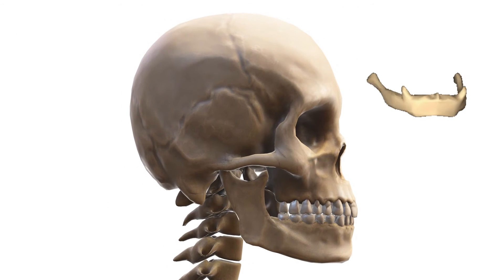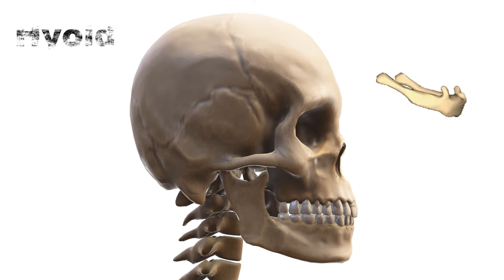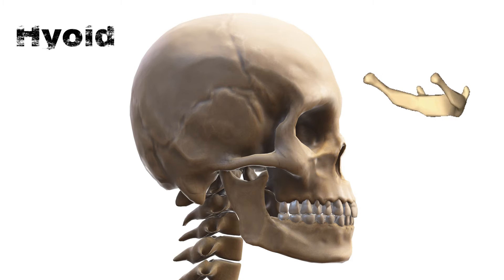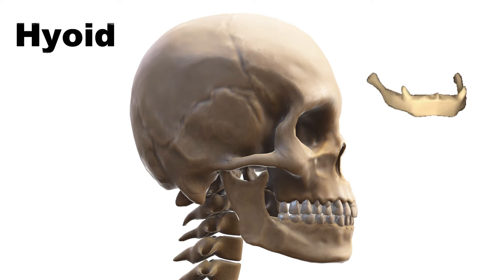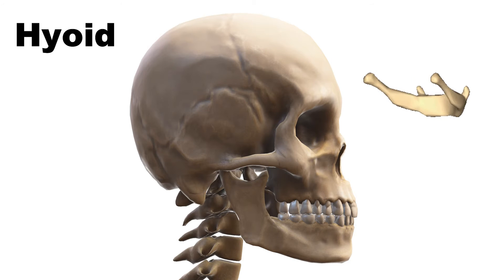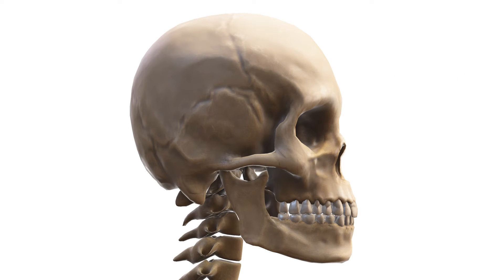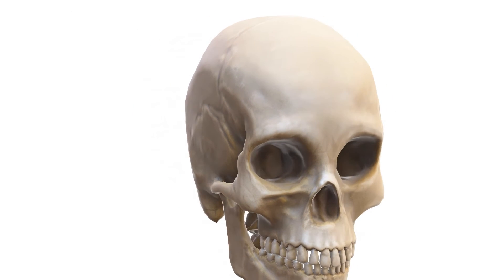Don't forget the hyoid bone, located in the neck. It supports the tongue and aids in swallowing and speech. Though not part of the skull, it's closely related. Now let's talk about the cranial bones, which protect your brain.